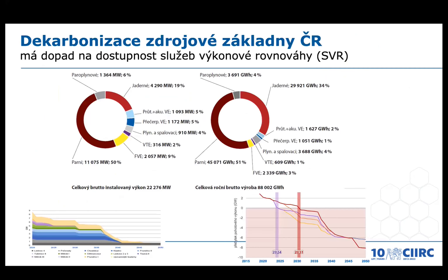Looking at the structure of the generation mix: on the left side are installed capacities of power plants; on the right, the chart shows generated electricity by type. Generally, 50 to 60% of electricity comes from fossil power plants. If those are switched off, they must be replaced by other types. We can generally say that power plants acceptable from an environmental point of view are not acceptable from the technical point of view of ancillary service provision, and vice versa — for example, providing ancillary services from a photovoltaic power plant is very hard, almost impossible without a battery.